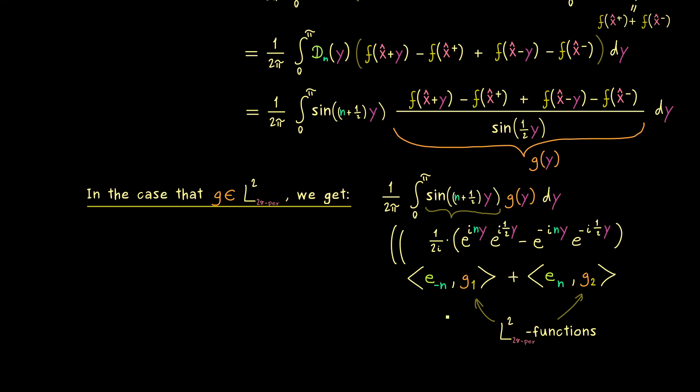The reason for that is that we already know what happens to the Fourier coefficients of a given L2 function if we send n to infinity. In fact this is what we know from Bessel's inequality. Namely the complex Fourier coefficients always go to 0 if we send n to plus or minus infinity. This thing we have explicitly discussed in part 8 of this series.